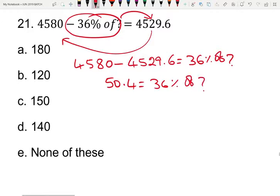So we have 36% of the unknown number. Observe this clearly. First of all, as usual, we need to simplify this.